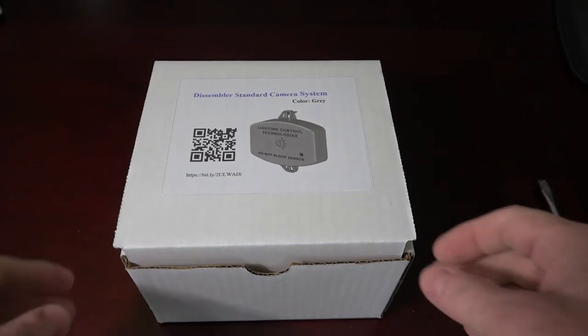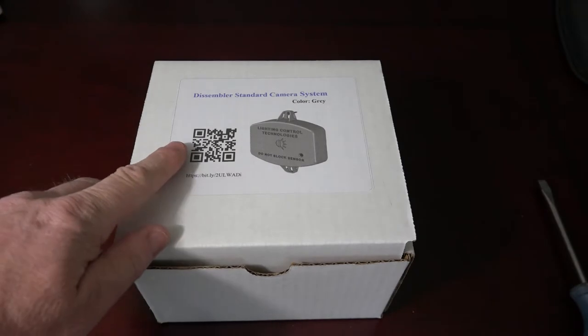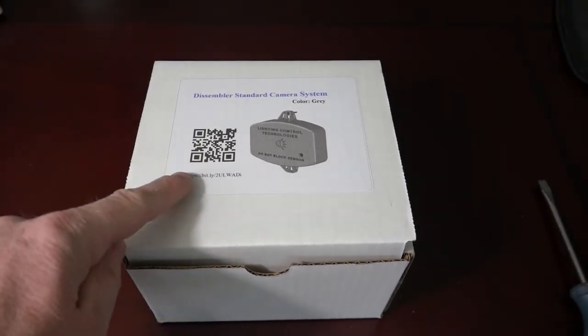This is the unboxing of the Dissembler standard camera system. On the front of the box is a label, a QR code, and a web address.